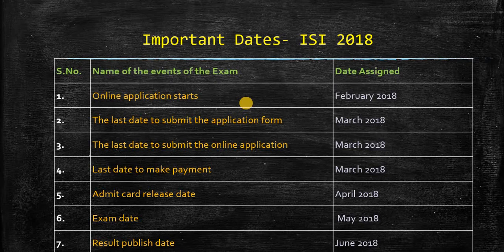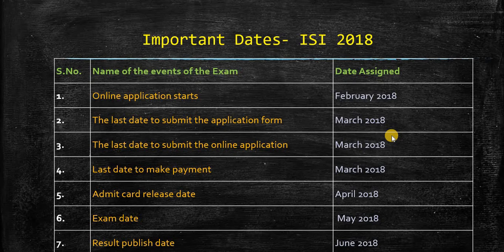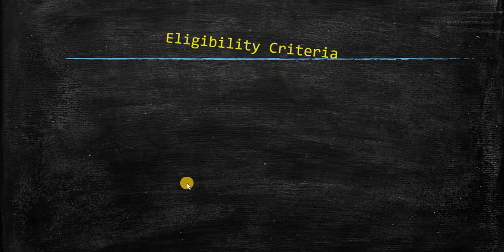The important dates are as follows. The online application starts in the first week of February 2018. The last date will be March third week. These are tentative dates; they haven't given the exact date this year yet. Last date to make payment is also in March. Remember that the examination will be on the second Sunday of May 2018, which is 13th May. The result will be first week of June.